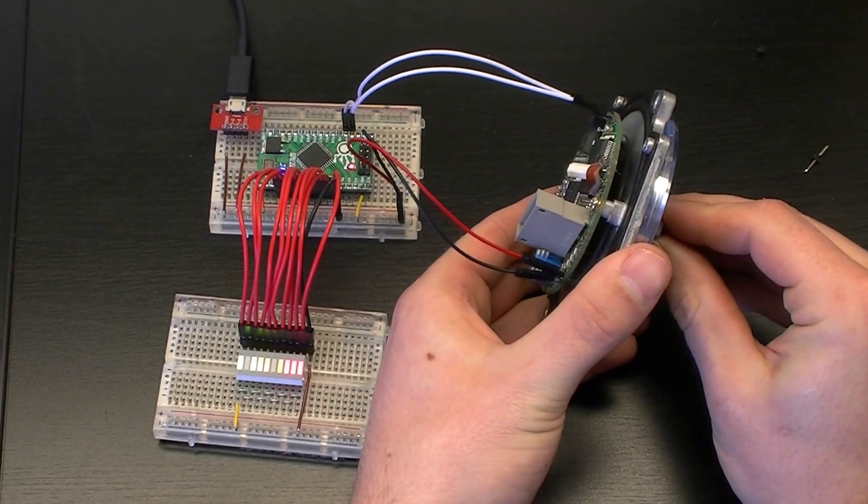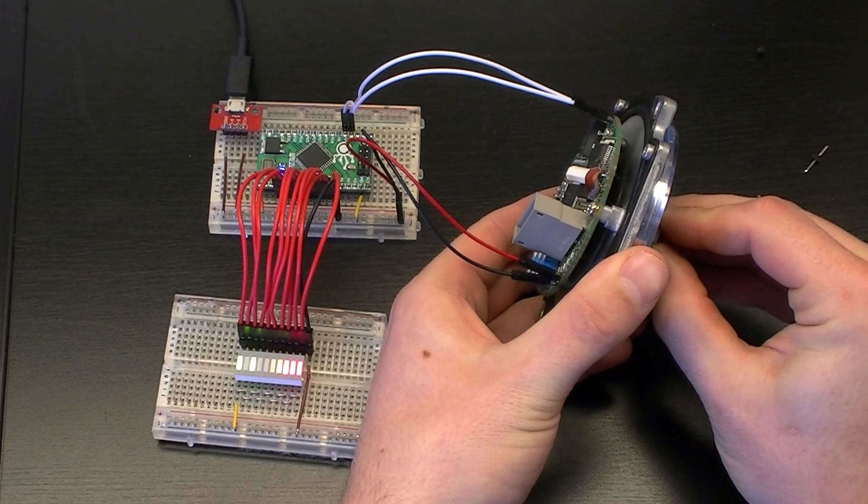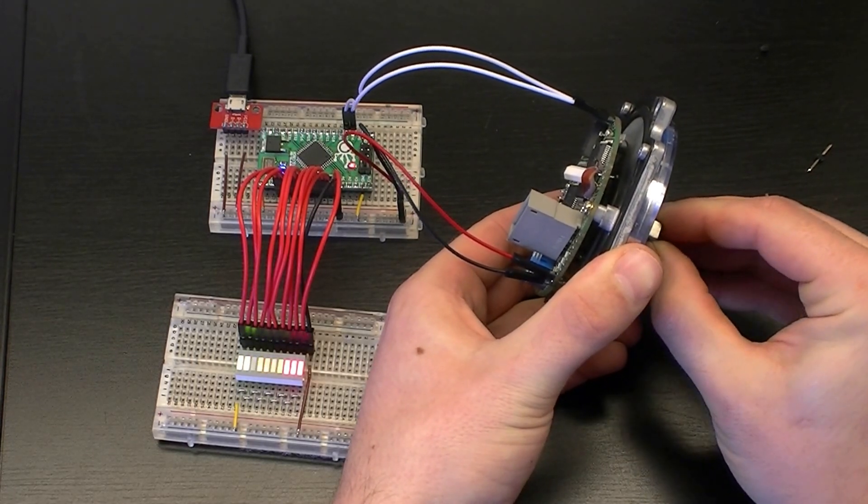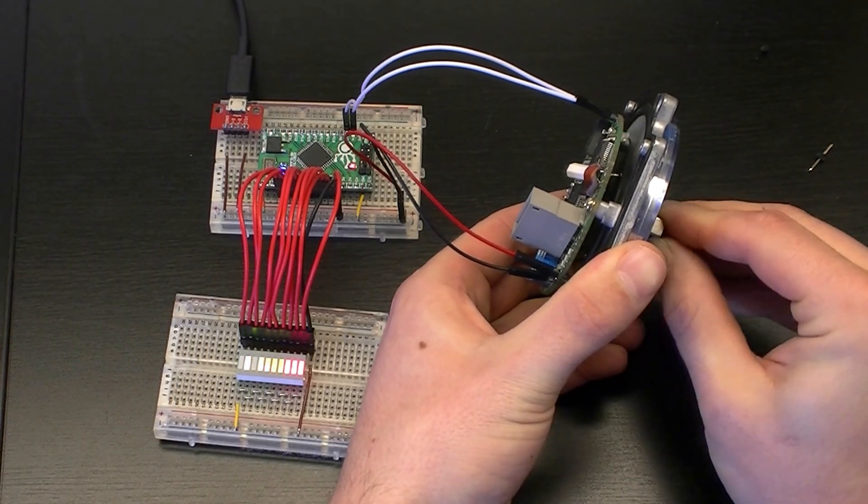So you can see when we spin it in one direction the count is going to go up. And when we spin it in the other direction the count is going to go down. So we can count up and then we can count down again. Now it's kind of hard to see.